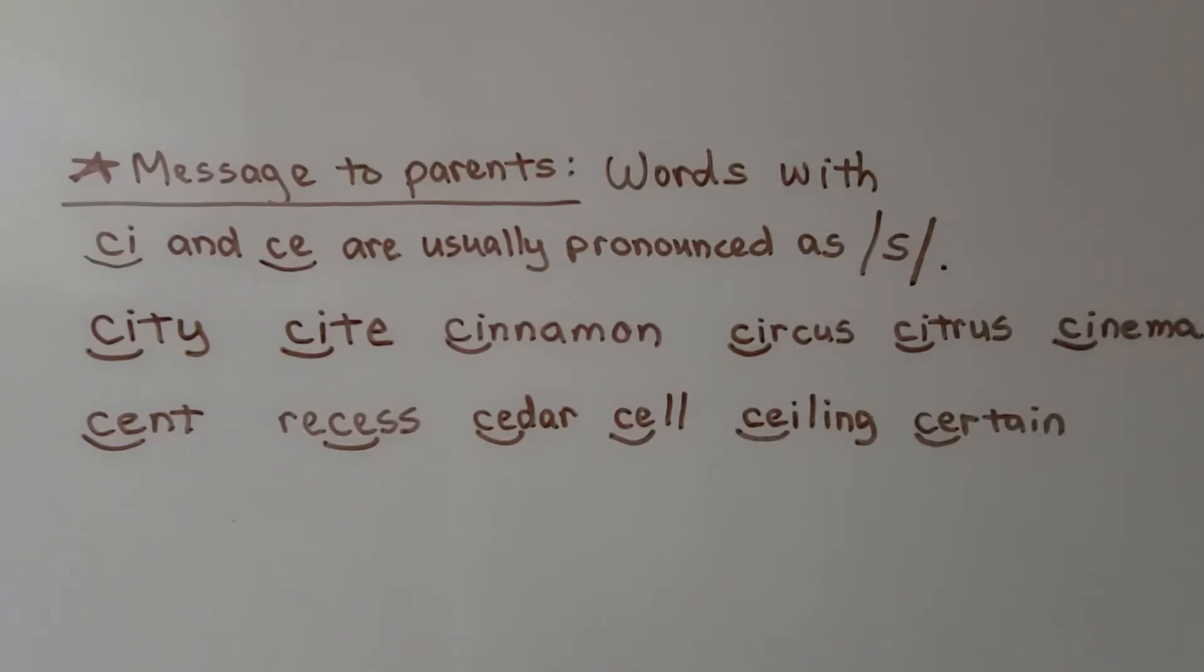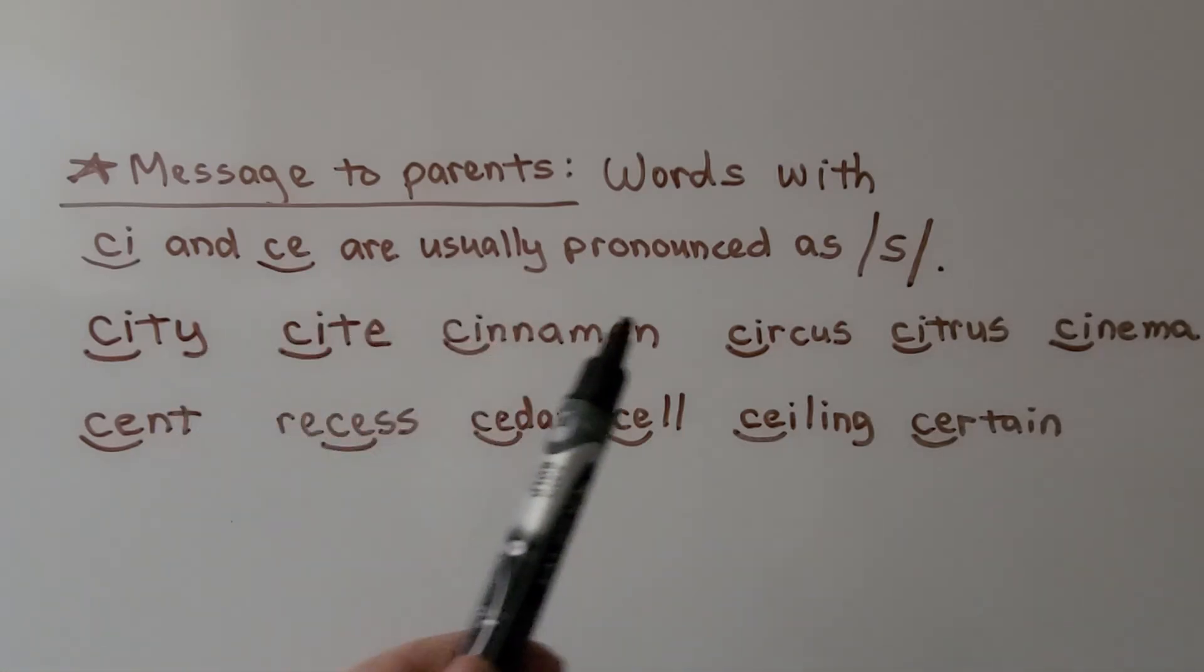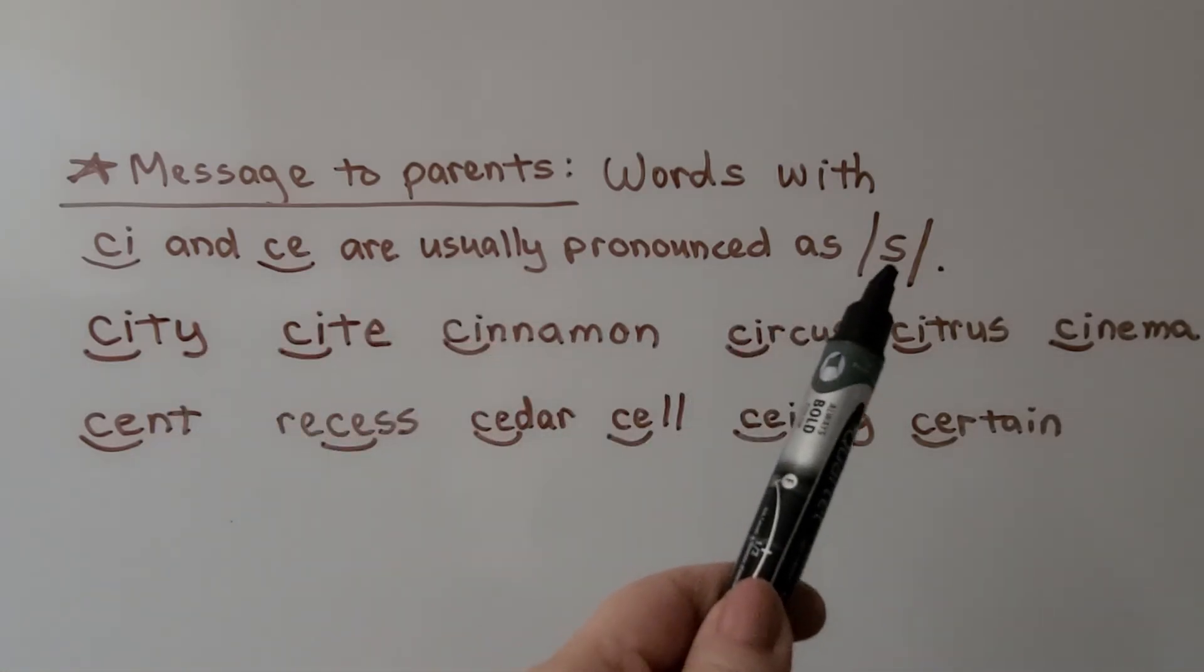Here's a message to parents. If your children are having trouble reading circle that starts with C-I, let them know that words with C-I and C-E are usually pronounced as suh.